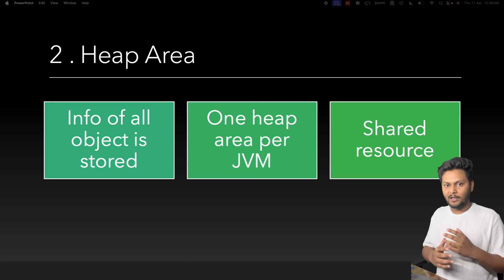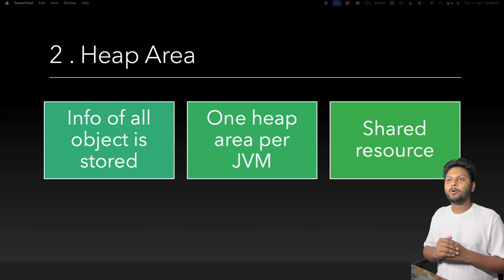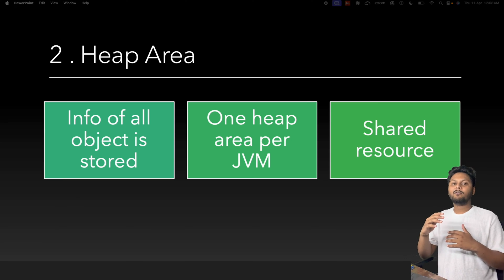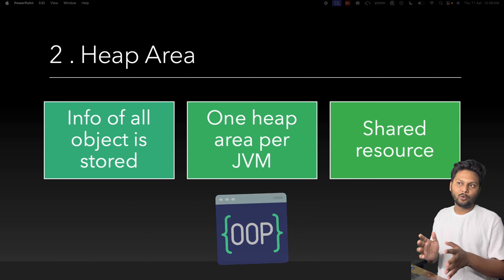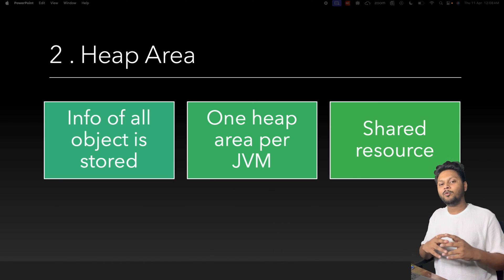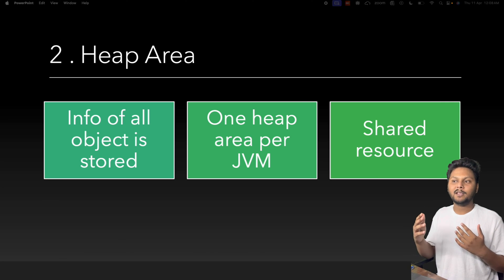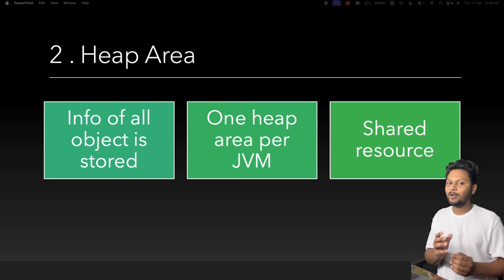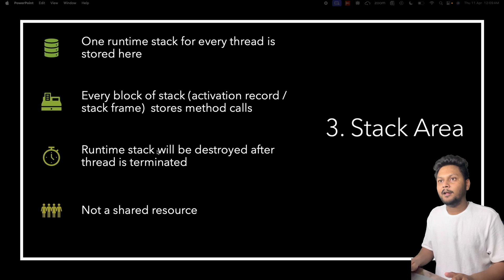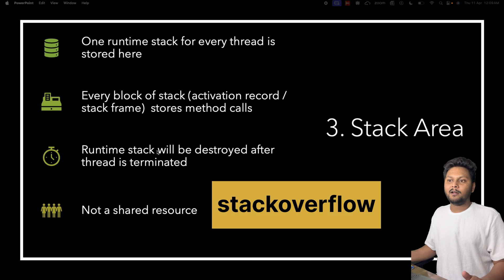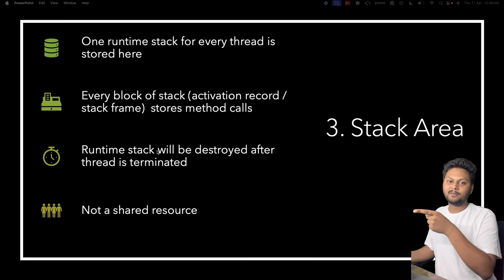The heap area stores information about all the objects created in Java. There is only one heap per JVM and it is also a shared resource. Since Java is an object-oriented language, all object information is stored at the heap area. You may have noticed that in IntelliJ or Eclipse you can allocate heap memory — if too little, compilation may fail with a memory error, so you increase the heap memory.